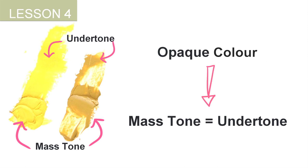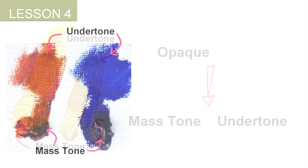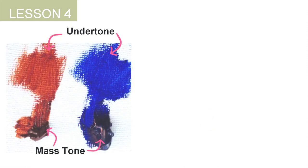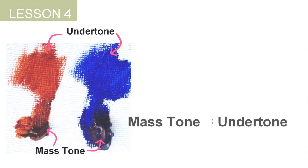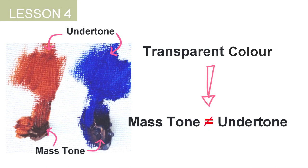That's because they are opaque colors. On the other extreme, some pigments have undertones that are very different from the mass tone. Phthalo blue and transparent red oxide are some of them.